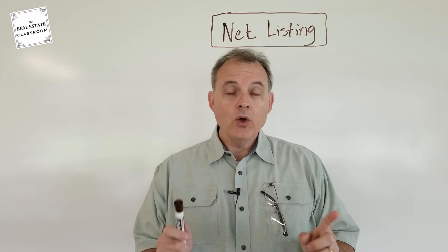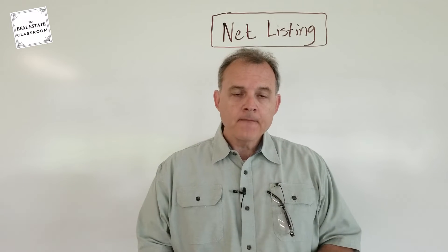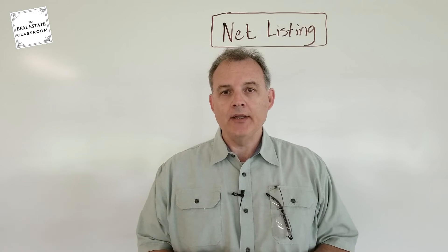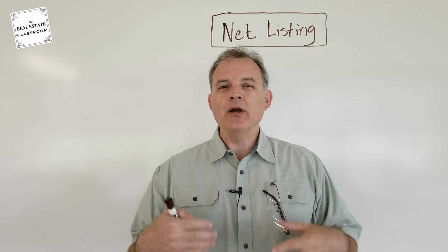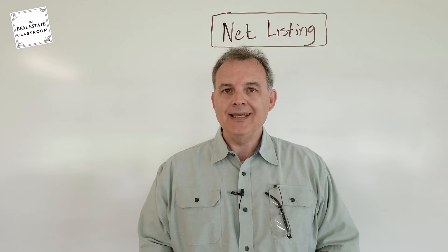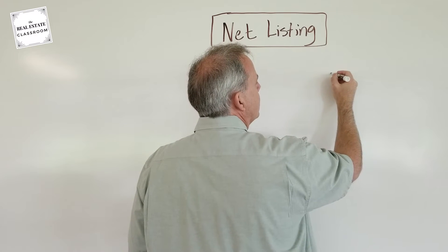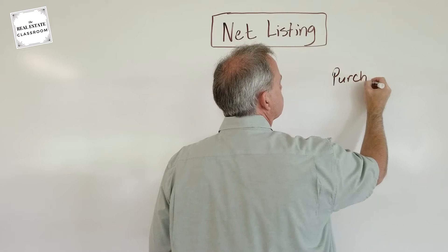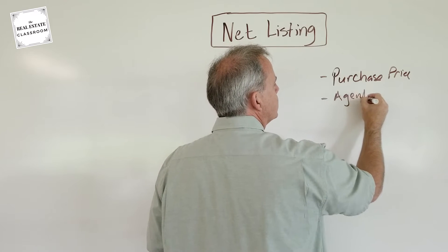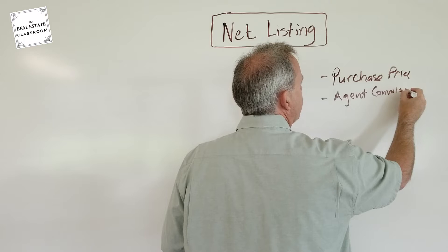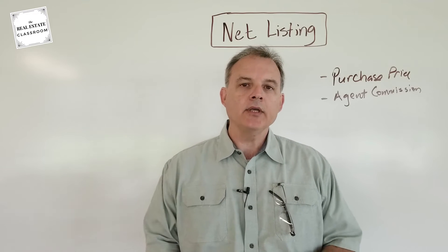One of the five was the net listing. We didn't get into the mathematics or the real estate math of how net listings work, so I'm gonna do that in this video. When there is a question on the real estate licensing exam regarding net listings, they're gonna want ultimately two answers: the purchase price and the agent or broker commission. They may wanna know one specifically or both, and I'm gonna show you how to calculate both.